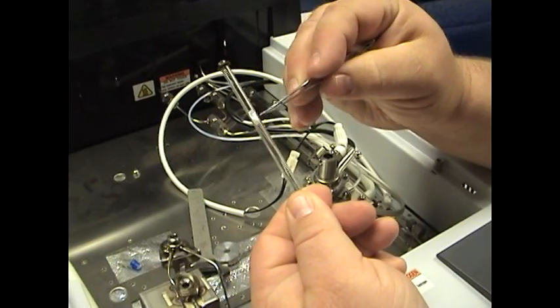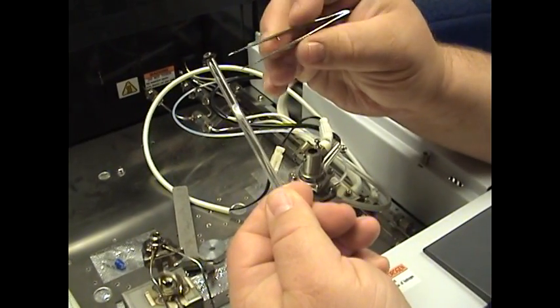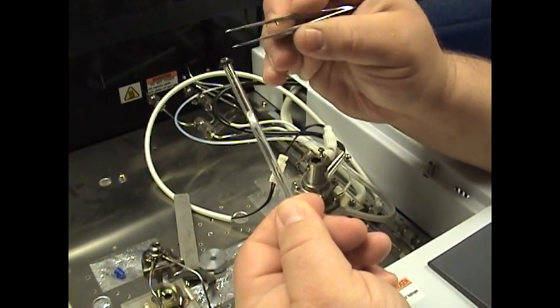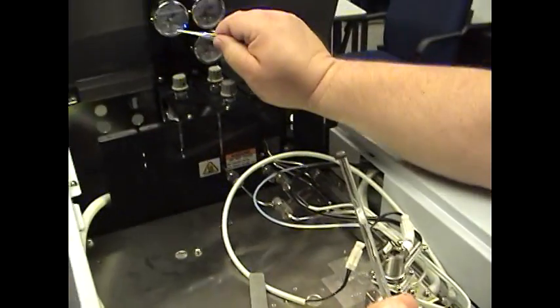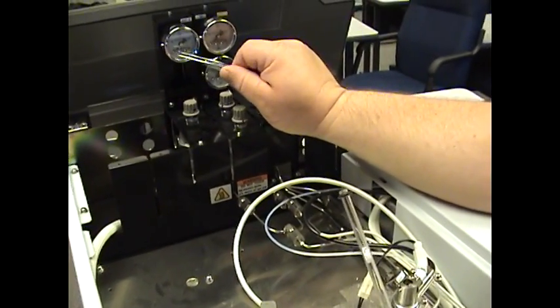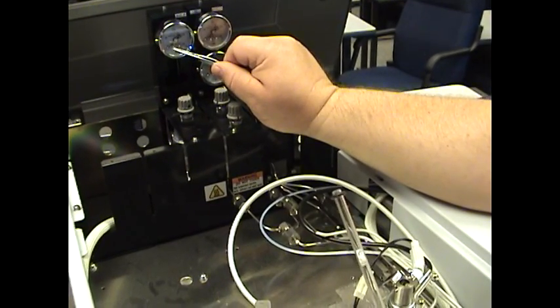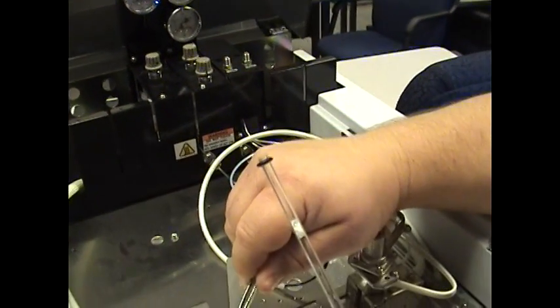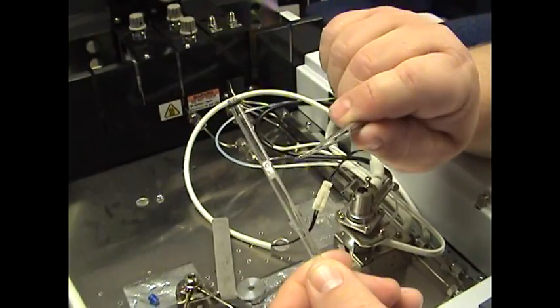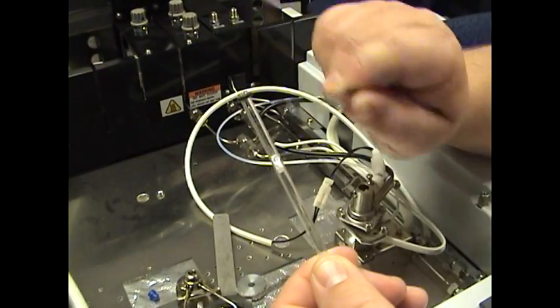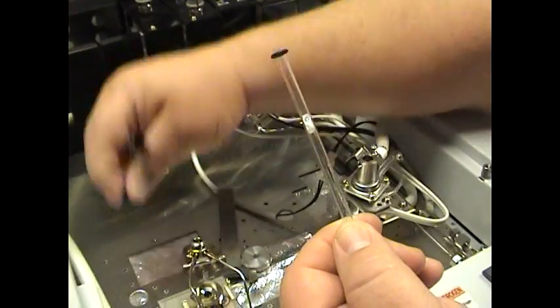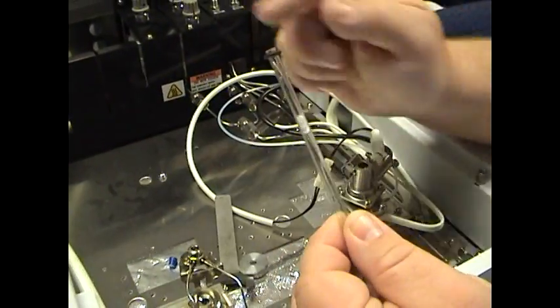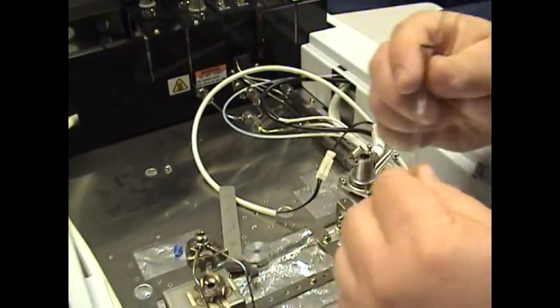You'll notice the quartz wool is in there. If you see the quartz wool up here or completely missing, that means that when we talked about having your makeup gas to zero, you actually had a head pressure on here and that was not to zero and that blew out the quartz liner or quartz wool once you remove the septa. If you do that, just put a new liner in there.